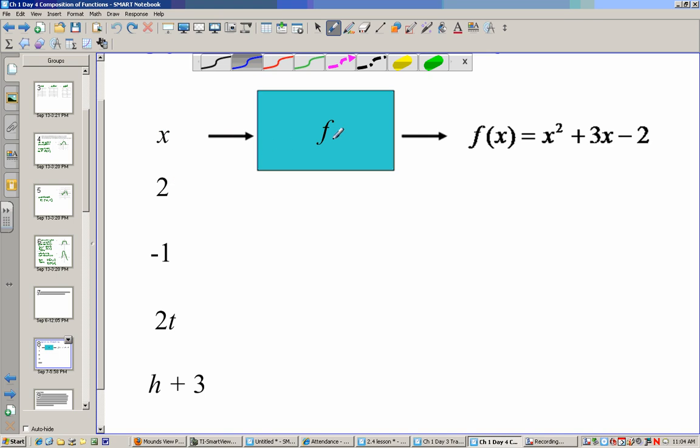If I have x, I send it into f and I get out f(x) equals x squared plus 3x minus 2. If I put a 2 and apply the same principles, I would get 2 squared which is 4, plus 2 times 3 which is 6, minus 2. That's 10 minus 2, which is 8.